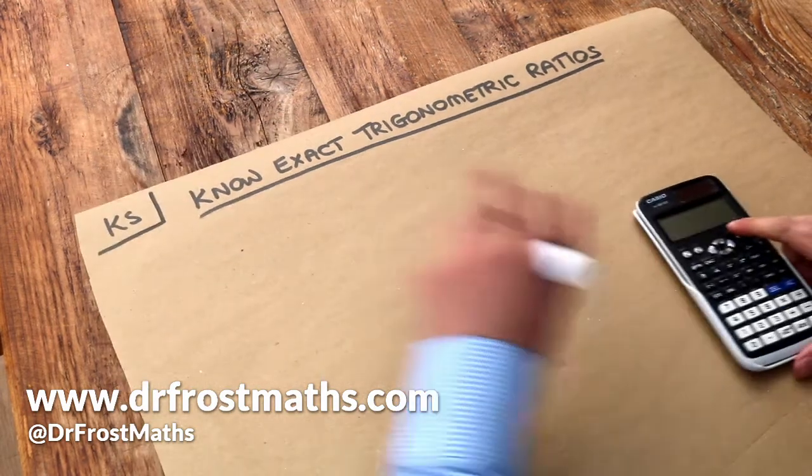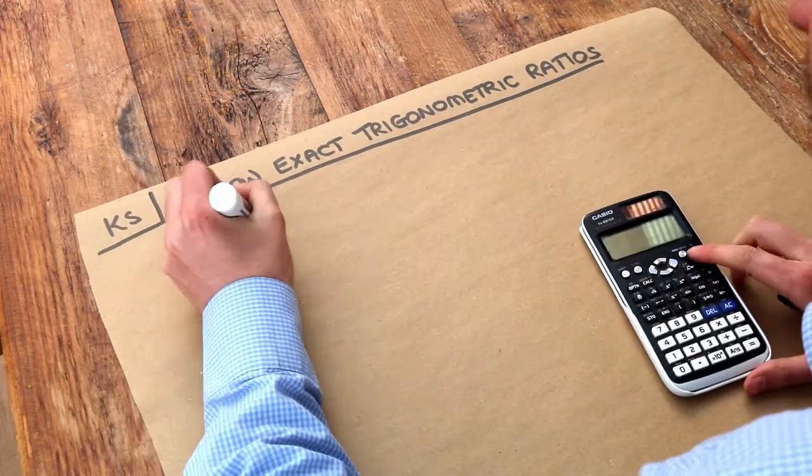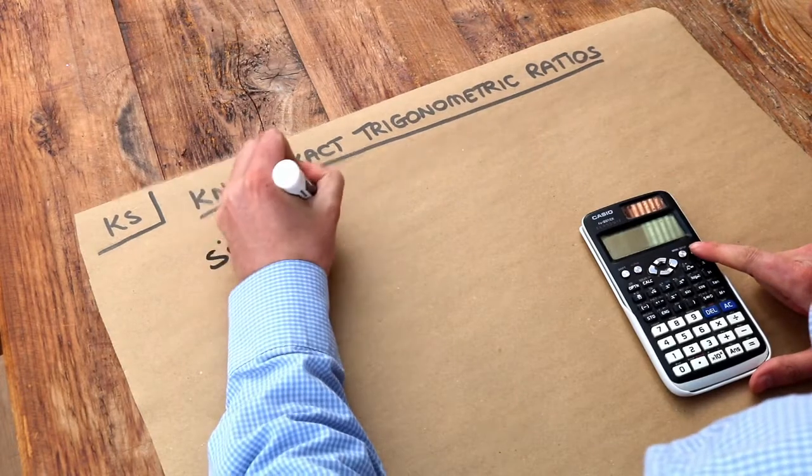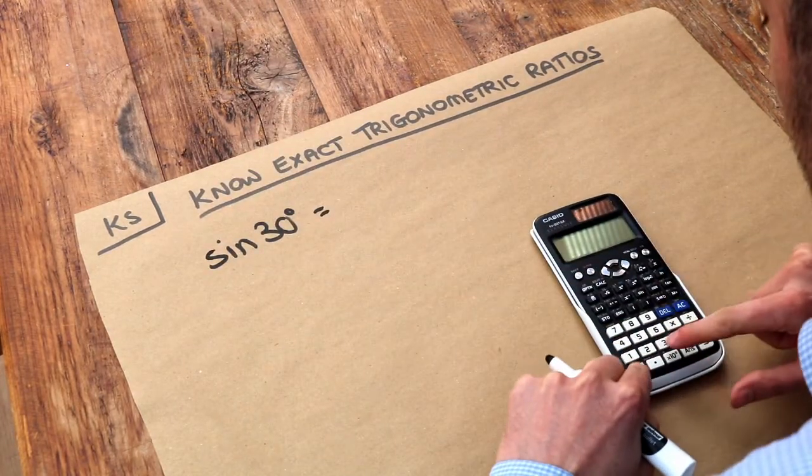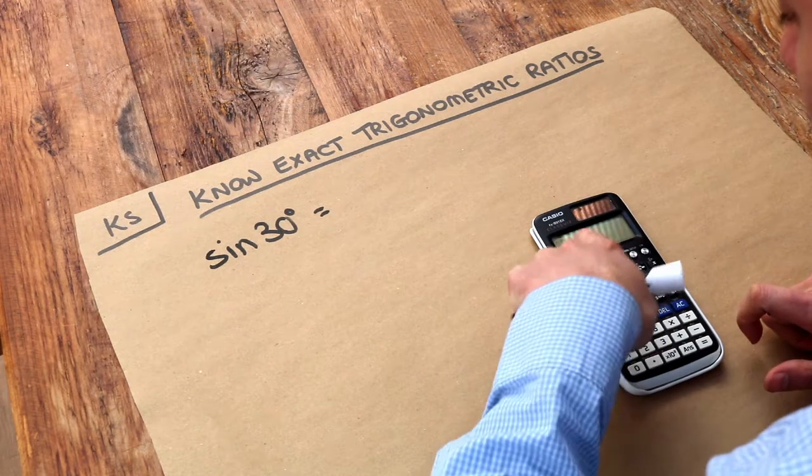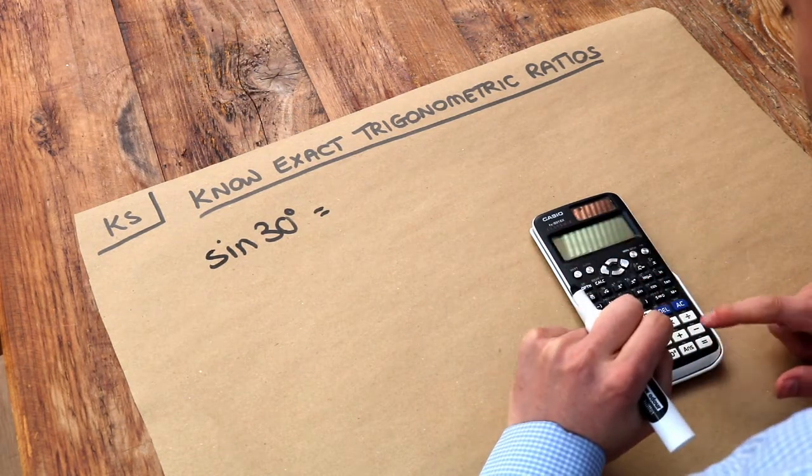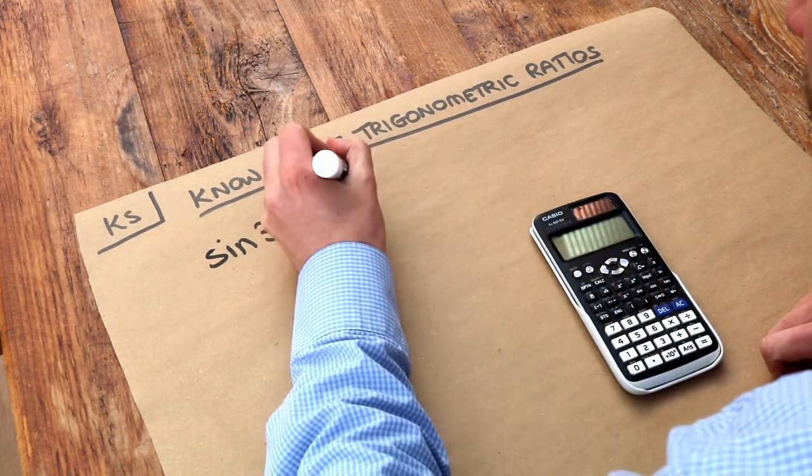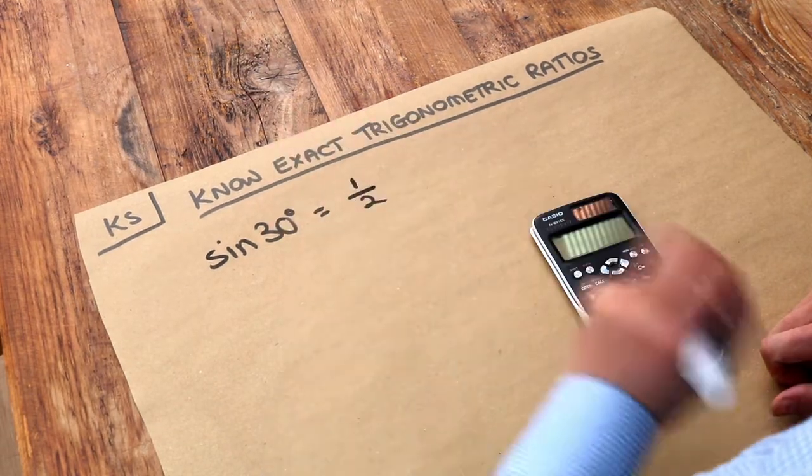Now if in your calculator you were to write sine of 30 degrees, so I do sine of 30 and press equals, making sure your calculator's in degrees mode, there should be a little d at the top of your calculator, we find it's 0.5 or half.